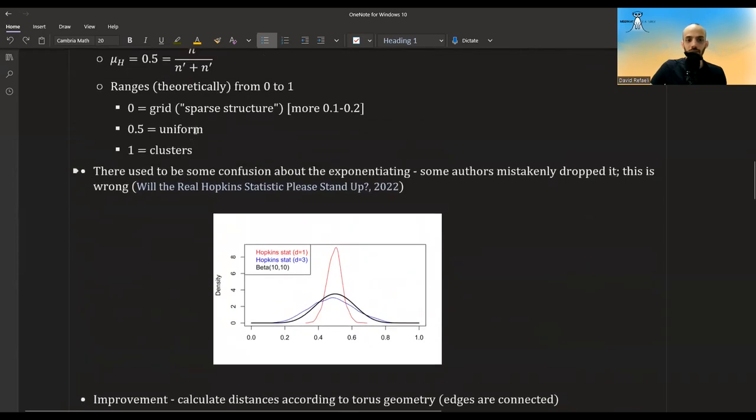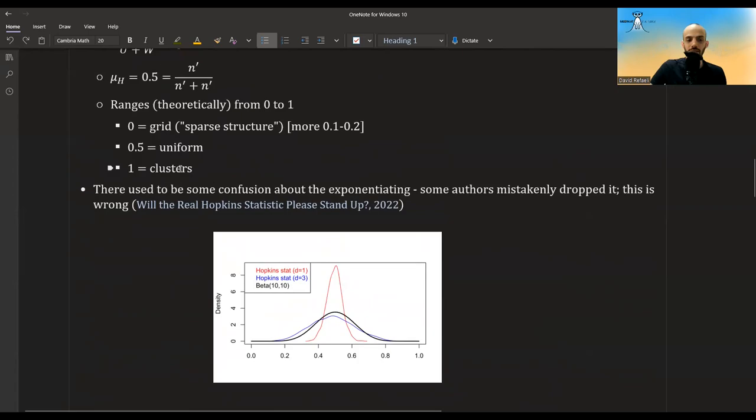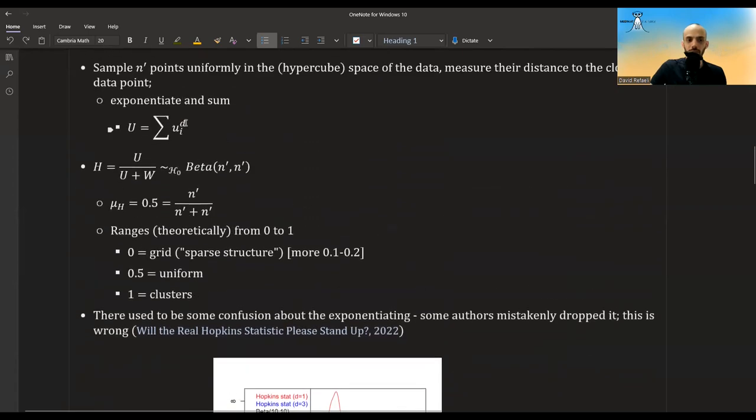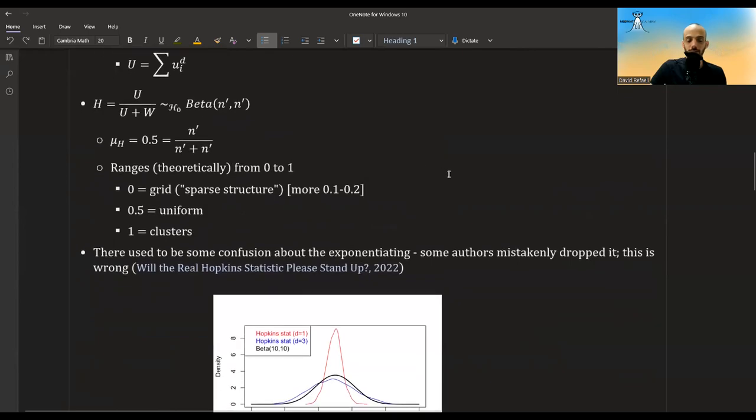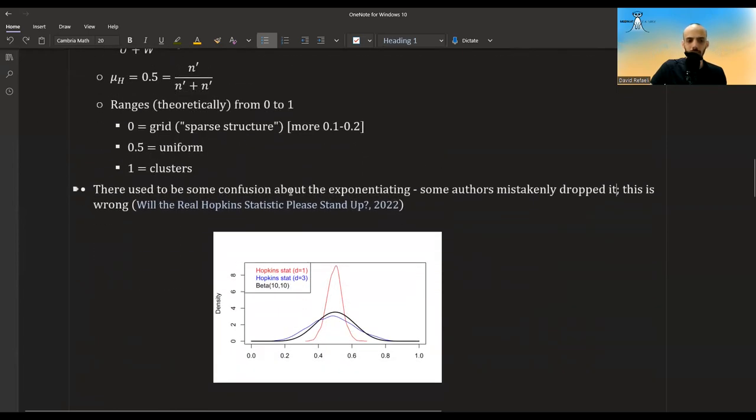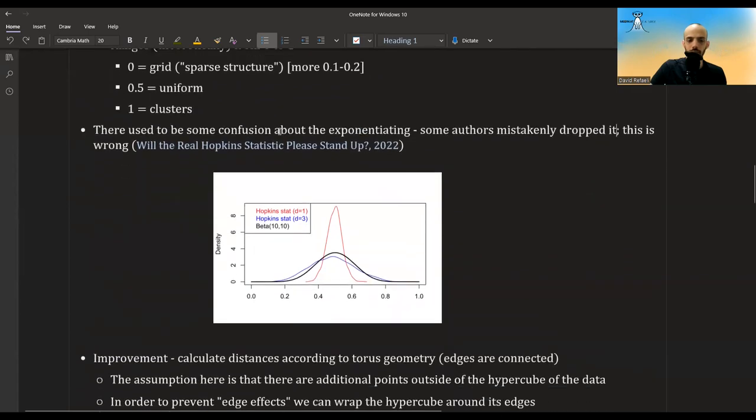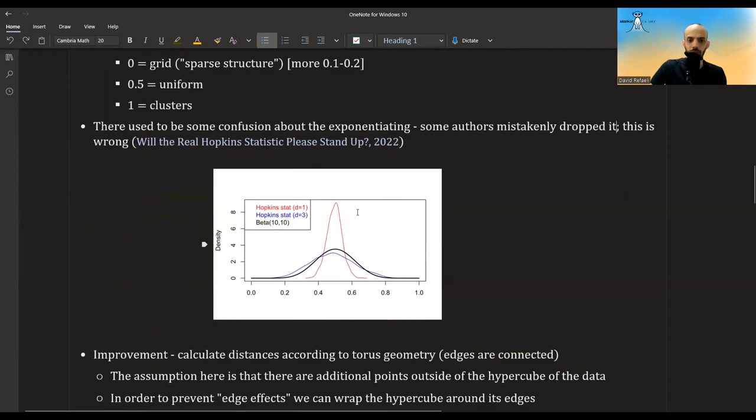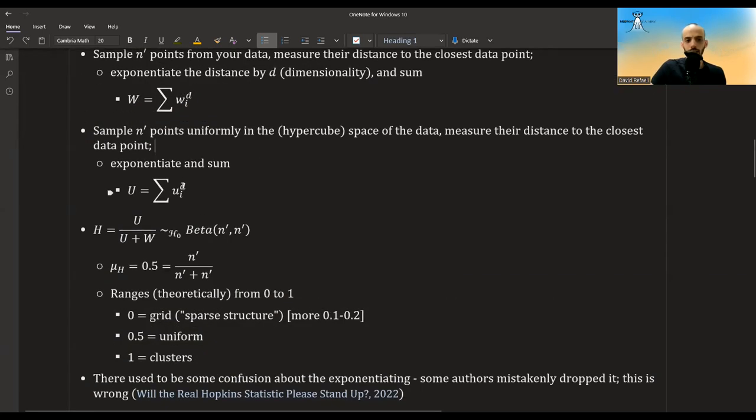Okay, so a little bit more information. There used to be some confusion about the exponentiating. You might have seen different versions, for example, where you don't exponentiate to the power of D, but this was wrong. Some authors mistakenly dropped it. You can read more about it in this paper over here, 'Will the real Hopkins statistic please stand up?' It's relatively new. And here's a graph from the paper that shows the true beta distribution. In red, you see what happens when you don't exponentiate the distances. And in blue, you see what happens when you do. Here, the real dimension of the data was three, so they exponentiate it to three. And you see that it's much closer to the true distribution of beta. So this formula is only true if you do take the distances to the power of the dimensionality.